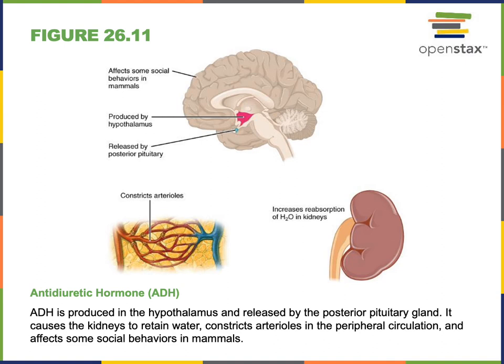Antidiuretic hormone is produced in the hypothalamus and released by the posterior pituitary gland, then travels through the blood to reach target cells in the kidney as well as in the arterioles — the small blood vessels that carry blood into capillaries. In the arterioles, antidiuretic hormone stimulates vasoconstriction, meaning the smooth muscle in the wall of the blood vessel contracts, which has the effect of increasing blood pressure. A synonym for antidiuretic hormone is vasopressin, and the name vasopressin comes from this effect of increasing blood pressure by stimulating contraction of arterioles.